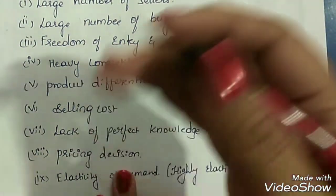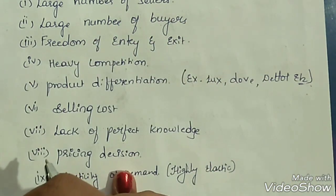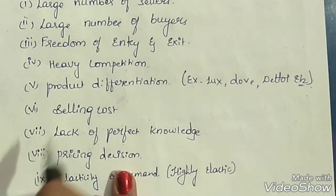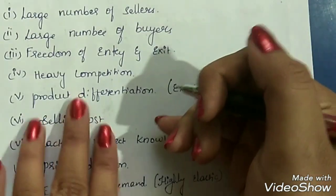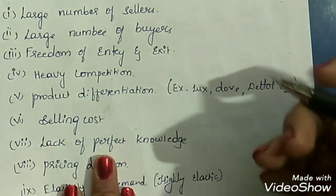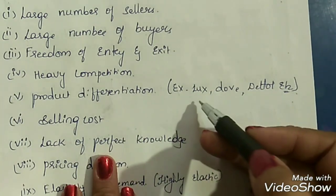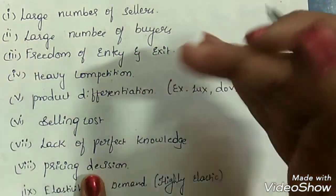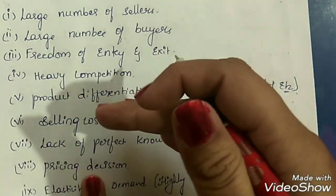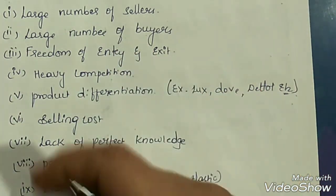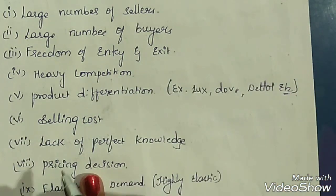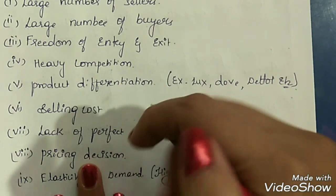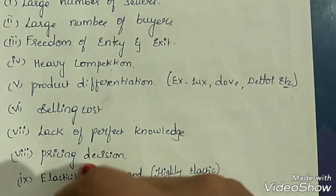Product differentiation: the products sold by sellers in this type of market are different from each other — they cannot be very similar or identical. For example, take body soap. We use body soaps of many brands like Lux, Dove, Dettol, and many others. They can be different in terms of quantity, quality, size, or shape — they are not exactly the same or homogeneous in nature. Similarly, we can take the example of a pencil — we can use pencils of different brands like Apsara, Natraj, Camlin, and more. That is what we call product differentiation: one product having many brands.